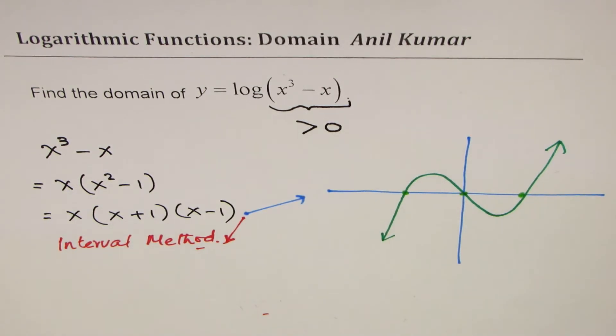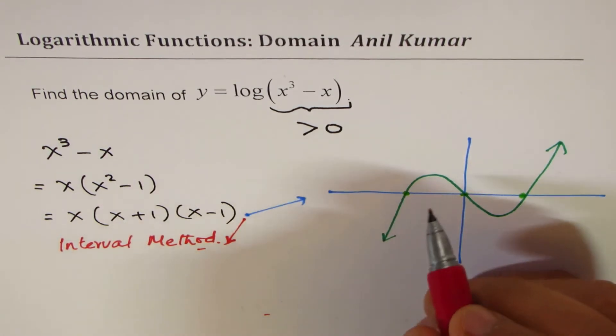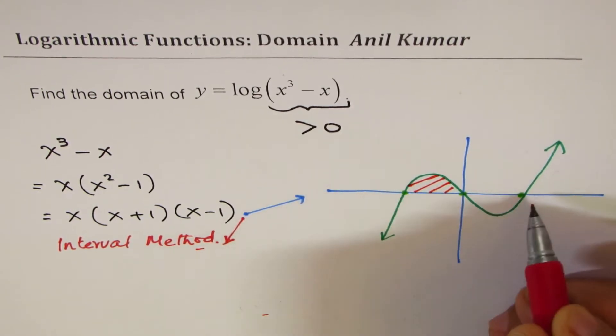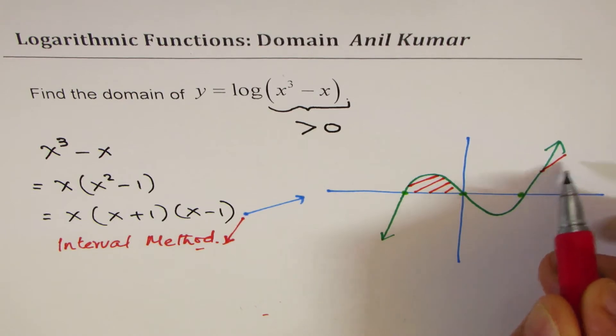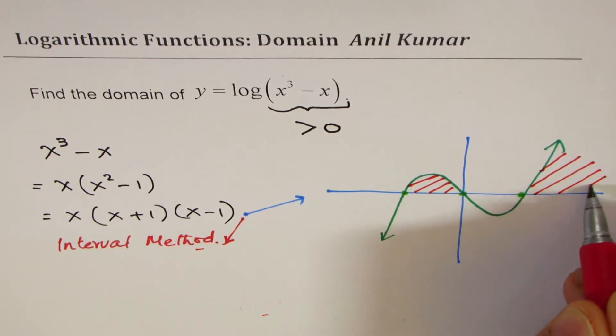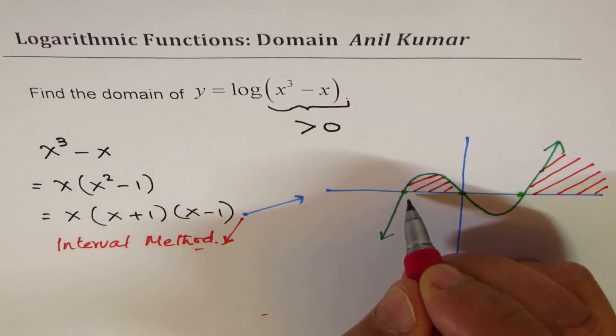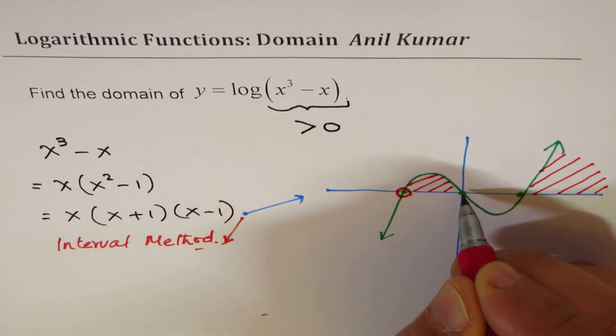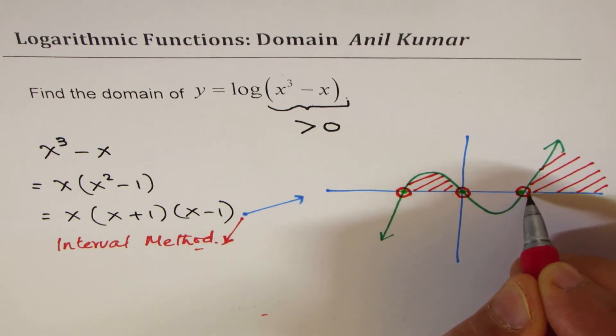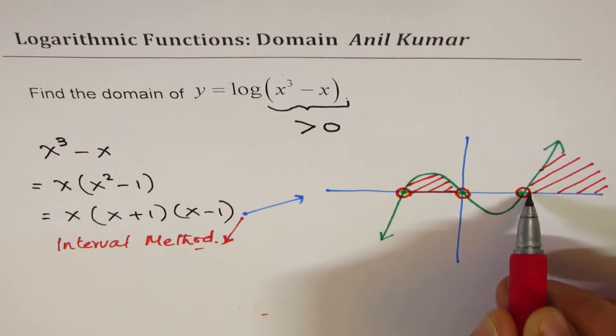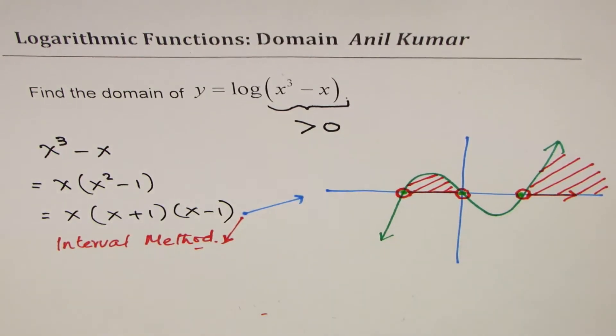Now, from the sketch, you can easily see the region where the function is positive. So the function is positive in this interval. So that becomes the domain of logarithmic function. You should not include the zeros. So on a number line, you will show it like this. Is that clear?